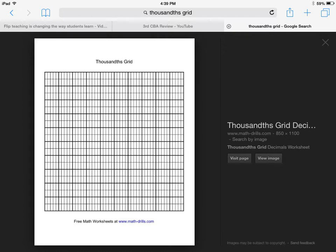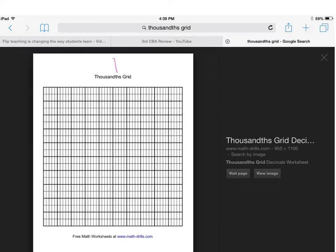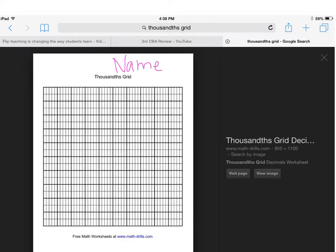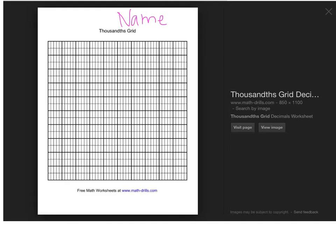The first thing that you're going to do after you watch the video is you're going to get a thousandths grid. Make sure they put your name on it. You're going to take that grid and you're going to color it in. You get to color it however you want to, and you can be as creative as you want to, but I do have some rules.